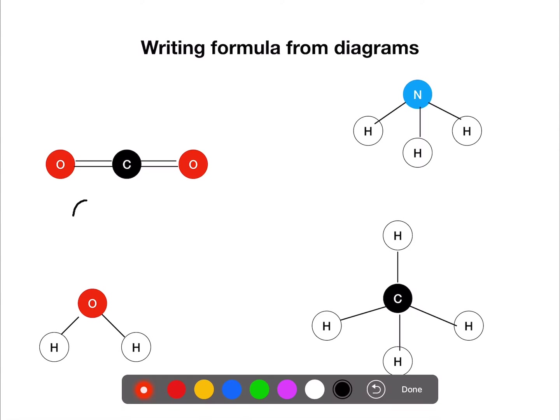For the first example we have one carbon. Where you have one of an element, we do not put the number. We've then got two oxygens, so the two goes to the right and slightly below.